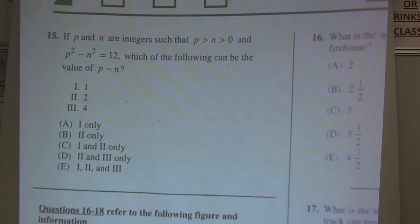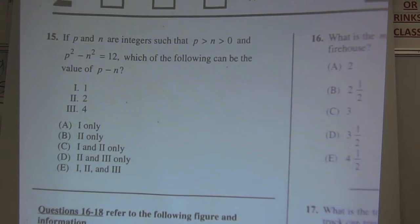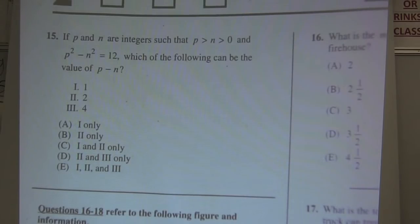Okay guys, this is going to be section 2, numbers 15 through 18. Number 15 says: if p and n are integers such that p is greater than n is greater than 0, means they're just positive numbers, and p squared minus n squared equals 12. There's a factoring problem right there.